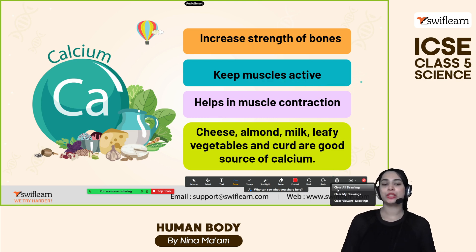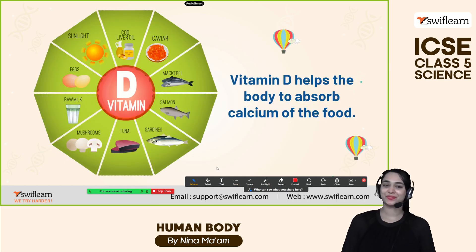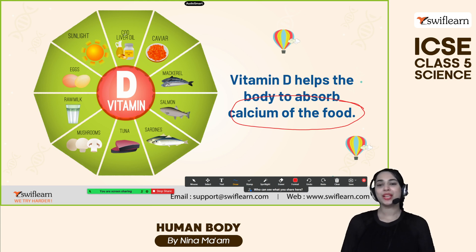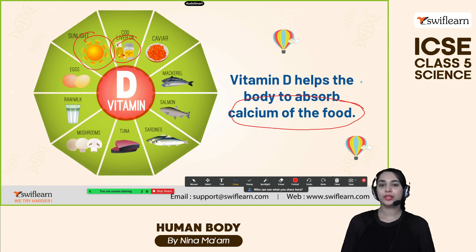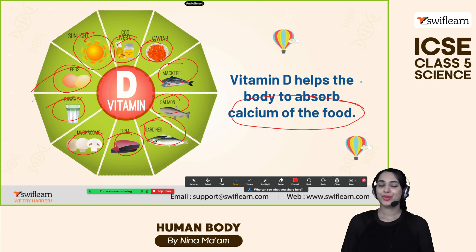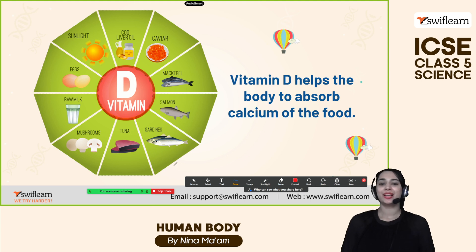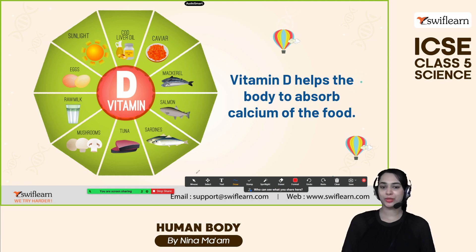Let's eat more leafy vegetables, cheese, and milk to increase calcium. Vitamin D helps the body absorb calcium from food. The sun is the greatest source of vitamin D. Apart from that, we can find vitamin D in liver oil, caviar, mackerel, salmon, sardines, tuna, mushrooms, raw milk, and eggs. Let's eat those foods and walk in sunlight to get enough vitamin D and avoid vitamin D deficiency.